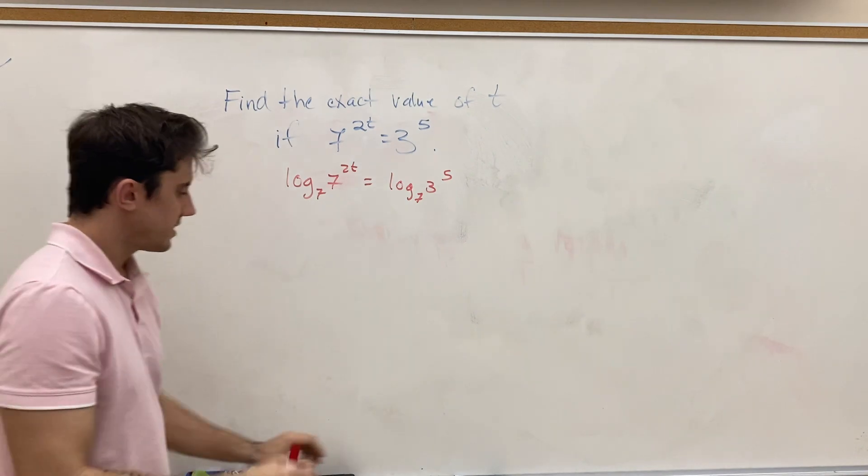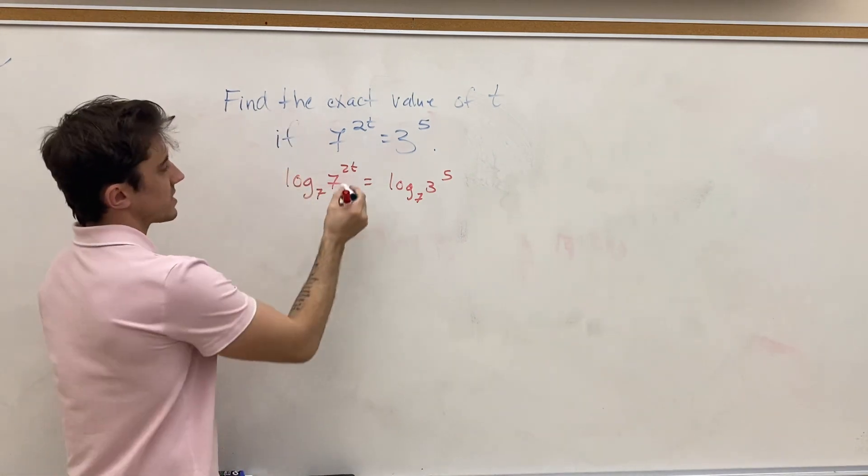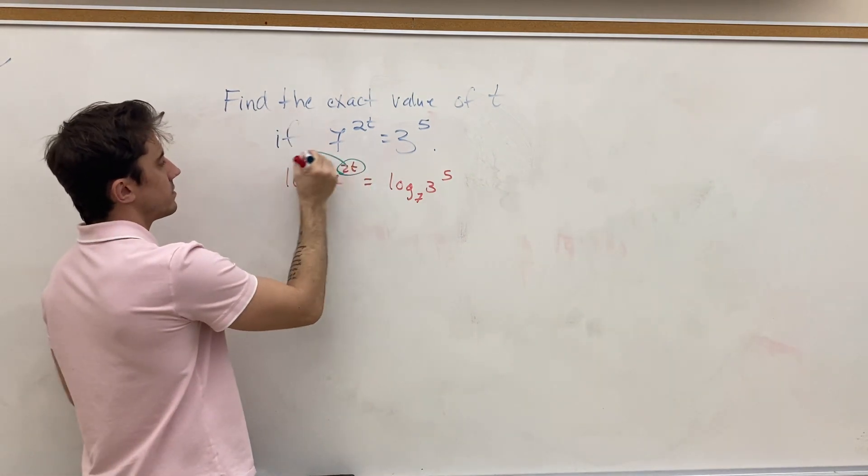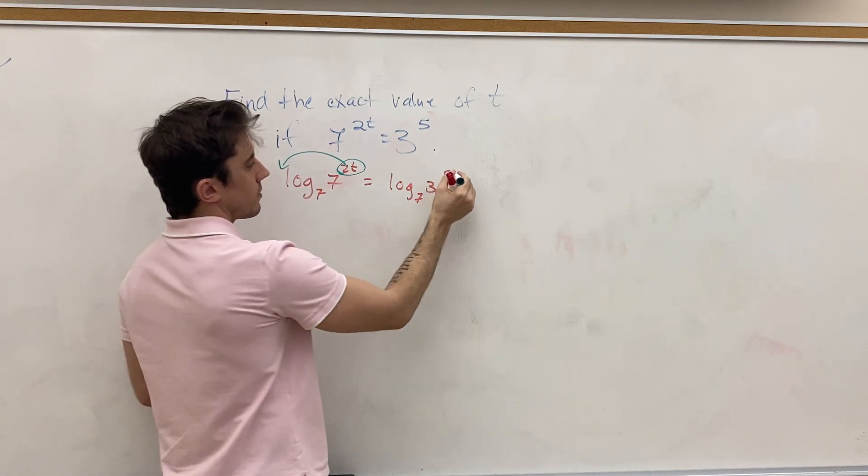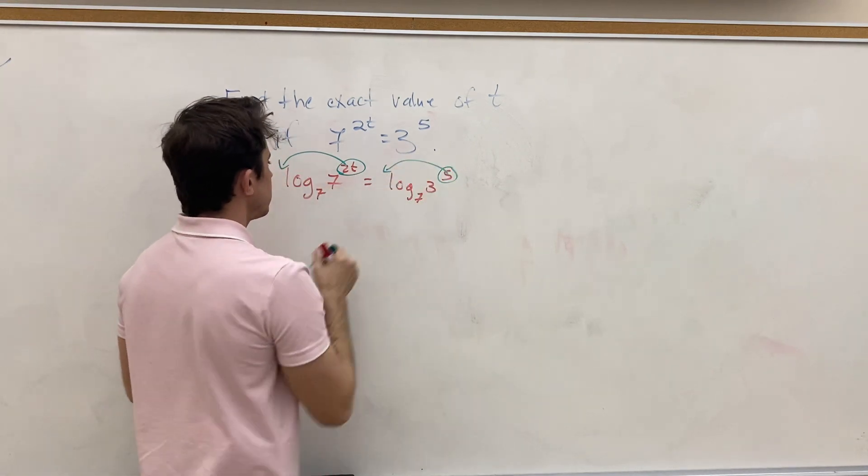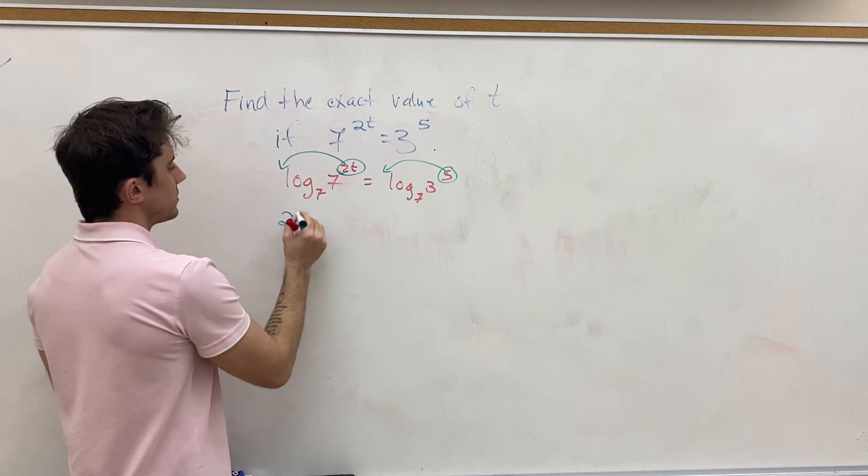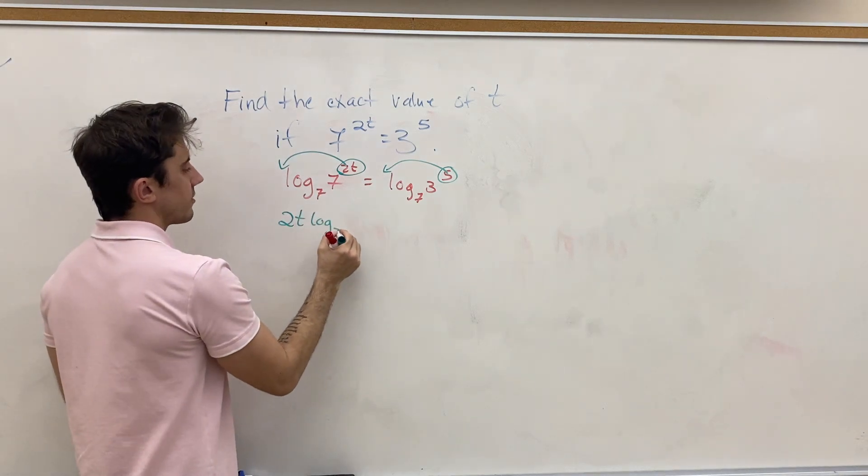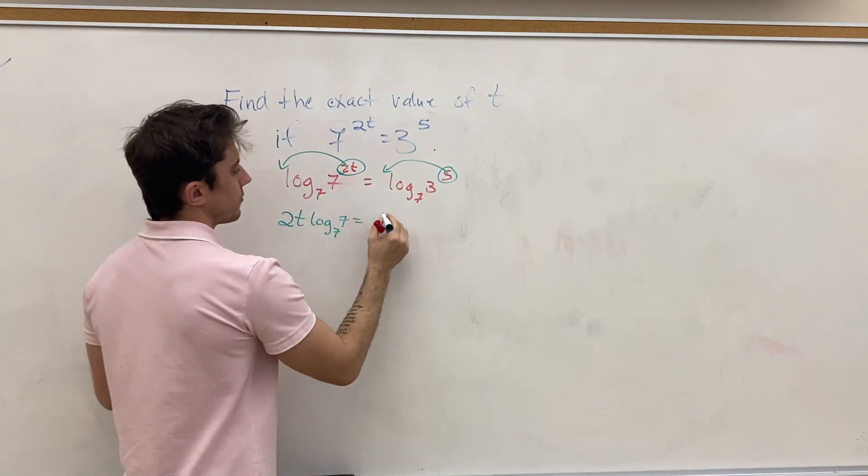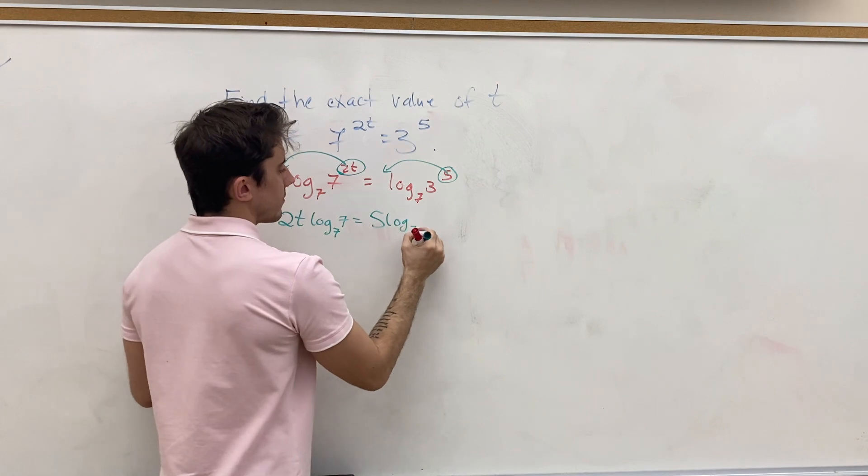Now, one of our basic log rules says that whenever we have an exponent in the argument of a log, we can pop it out as a coefficient. And apply that rule to both sides. So, now, we get 2t log base 7 of 7 is equal to 5 log base 7 of 3.